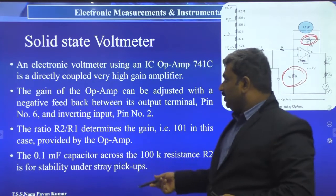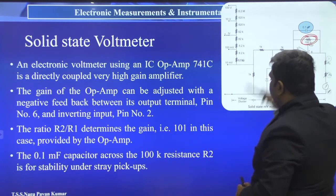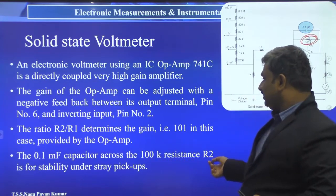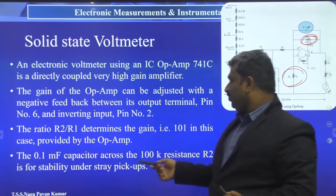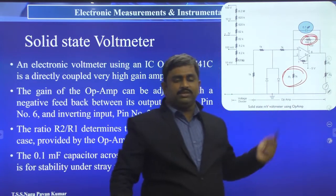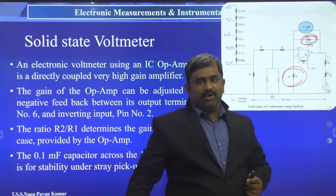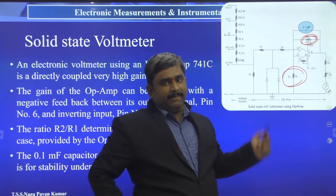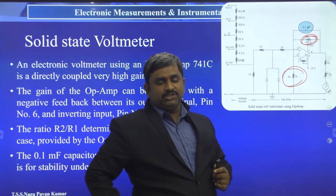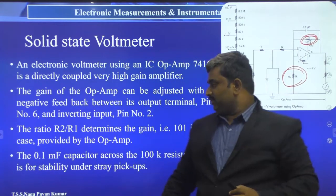A 0.1 microfarad capacitor is placed across the 100 kilohm feedback resistance R2 for stability and to eliminate internal stray capacitance effects. This capacitor reduces stray effects to improve the accuracy of the circuit.